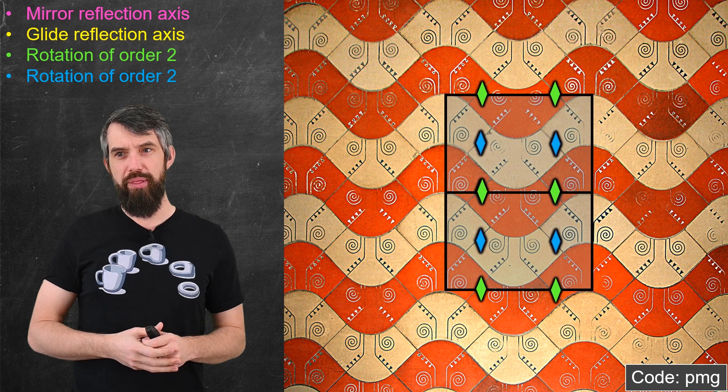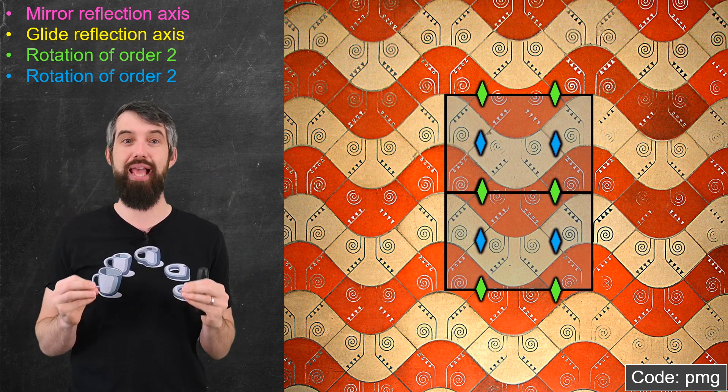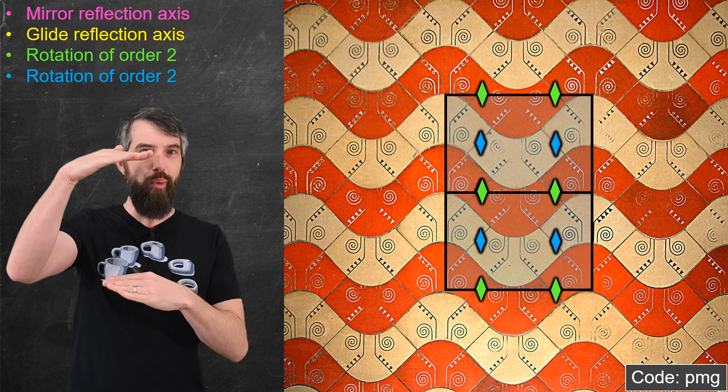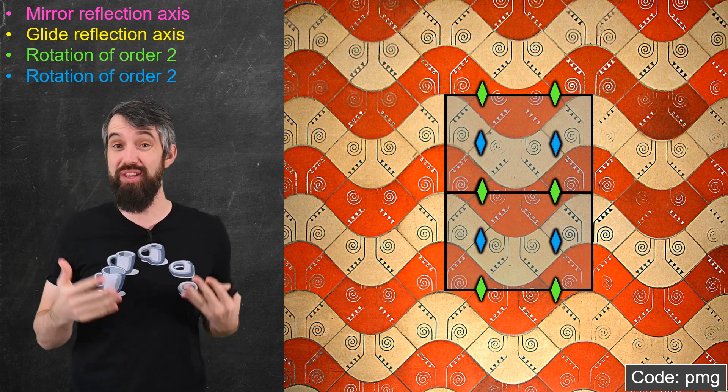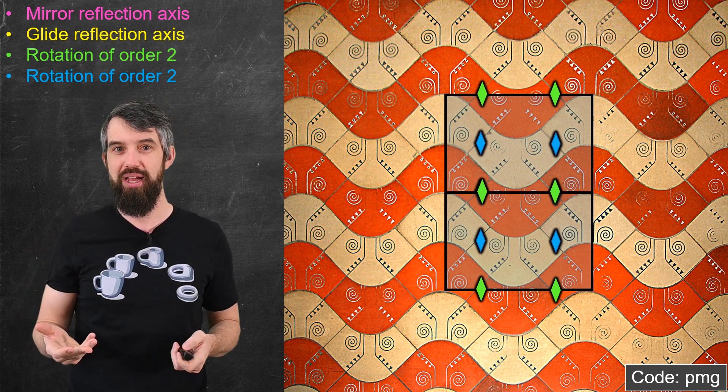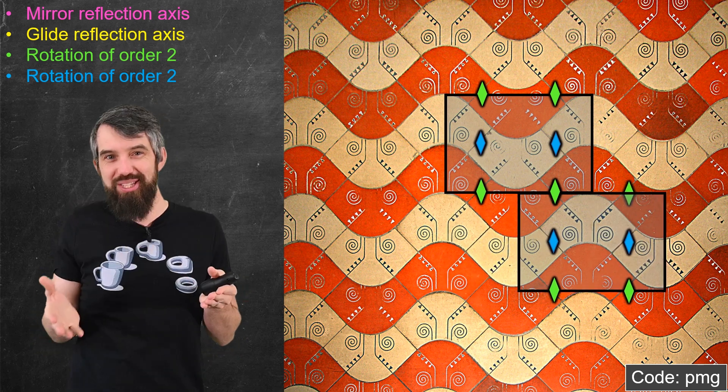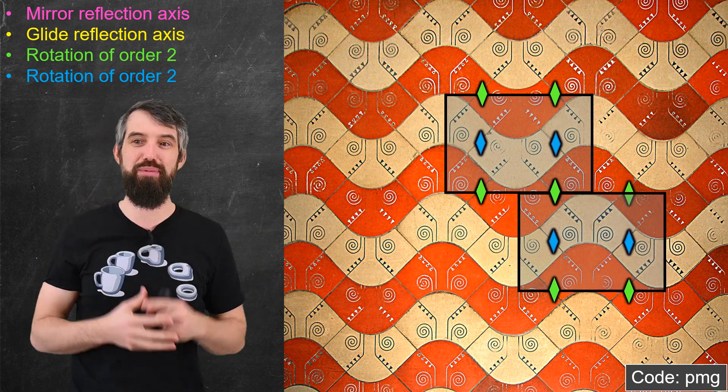If I take this, and I translate it down, then the rotation centers at the top have now become the rotation centers at the bottom. That is, the top ones and the bottom ones really are the same under this translational symmetry that we've already established. And likewise, if I use the glide reflection business, the left one glides over to the right one. And the same is true for the blue. Under the glide reflections, the left one goes to the blue one.